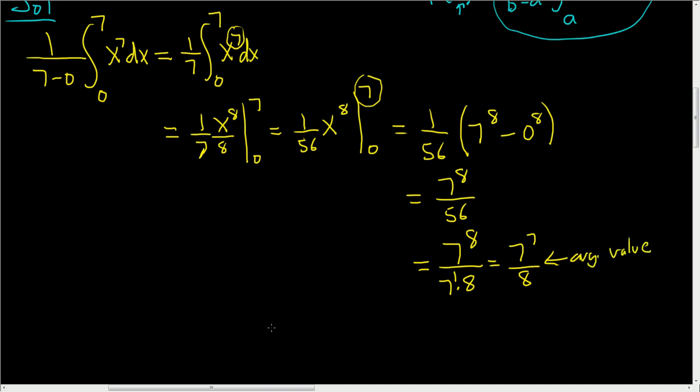We want the value of c guaranteed by the mean value theorem. So now all we do is recall that f of x was equal to x to the 7th. So we set f of c equal to what we worked out on the right-hand side, which is this. So 7 to the 7th over 8. So once you work out this guy, all you do is set it equal to f of c. f of c is c to the 7th, right? Because f of x is x to the 7th. This is equal to 7 to the 7 over 8.